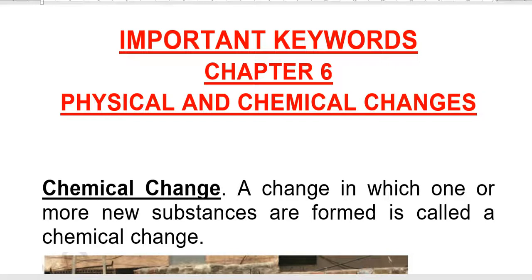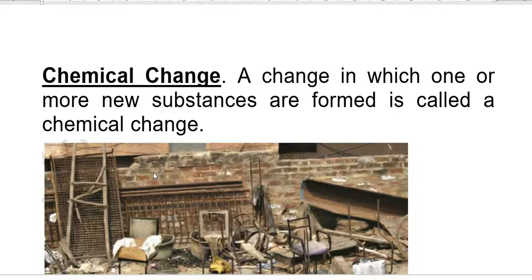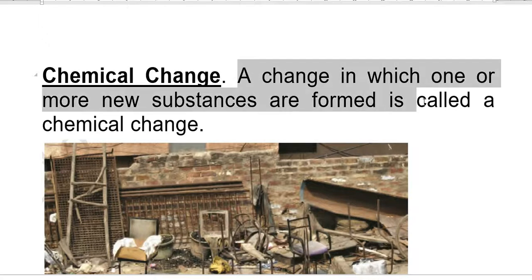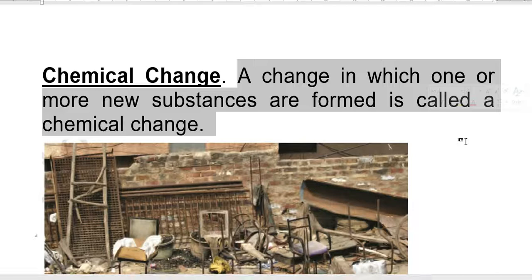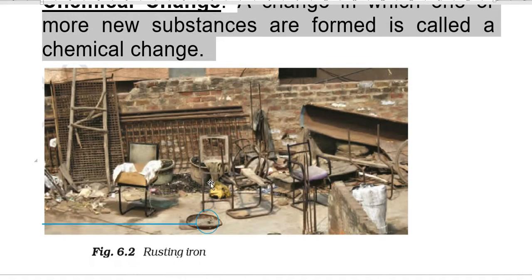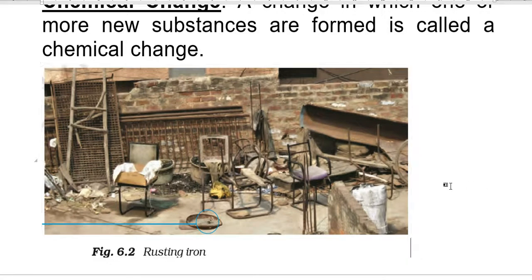The first keyword is chemical change. A change in which one or more new substances are formed is called a chemical change. For example, the rusting of iron in which iron becomes rust. The rust is a new substance, so this is a chemical change.